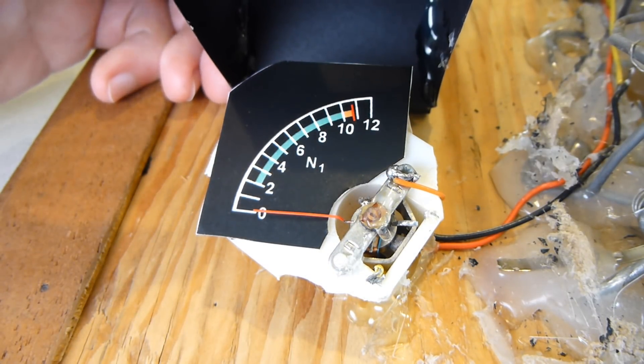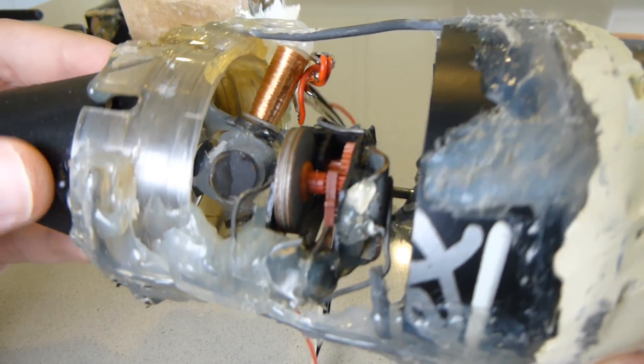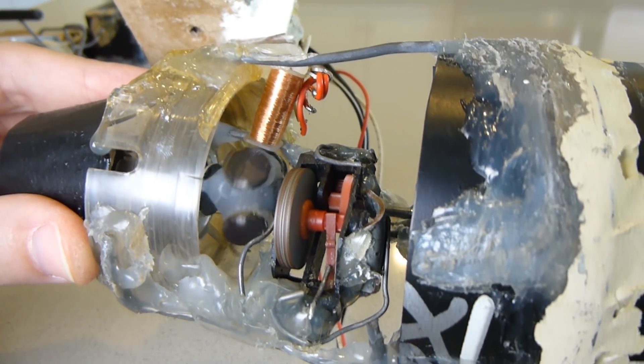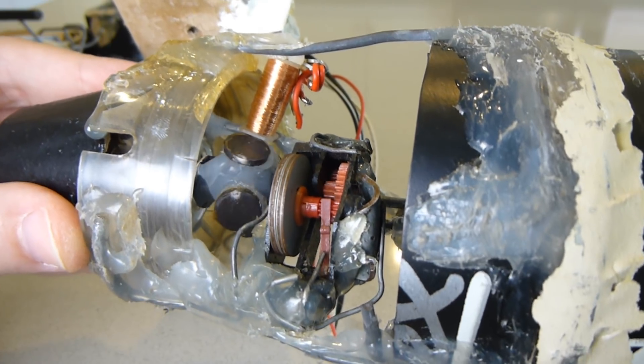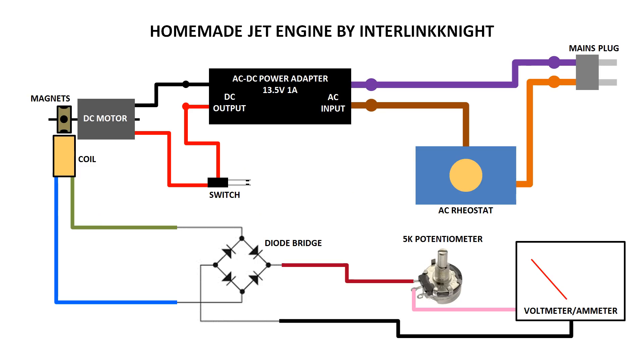The gauge is a common voltage meter that is powered by a coil near four magnets on the shaft to work as a generator that later had to be converted to DC with a diode bridge.